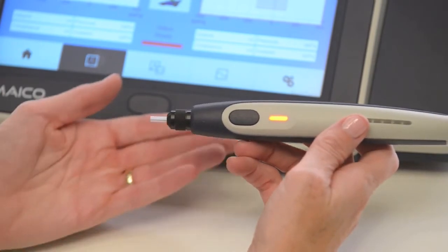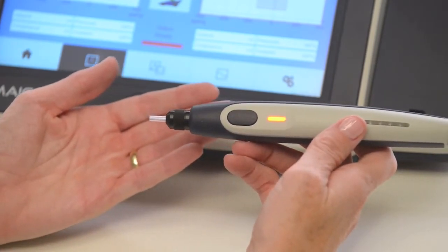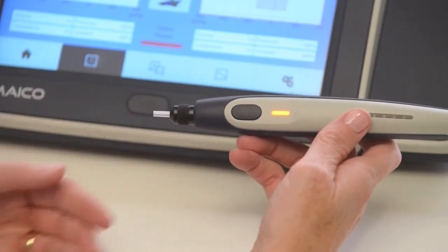If there is an obstruction, clean the probe tip using the tool provided. An occluded probe could result in flat tympanograms and may damage the probe.